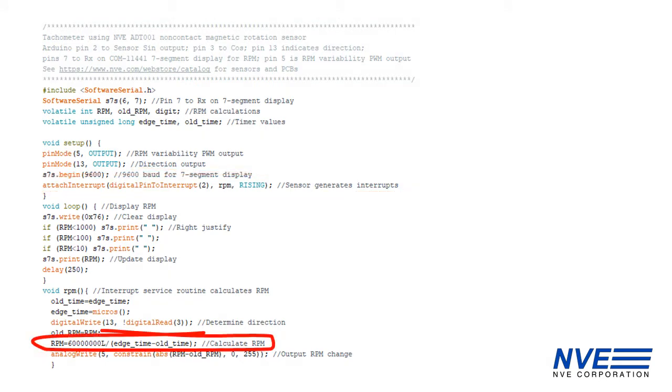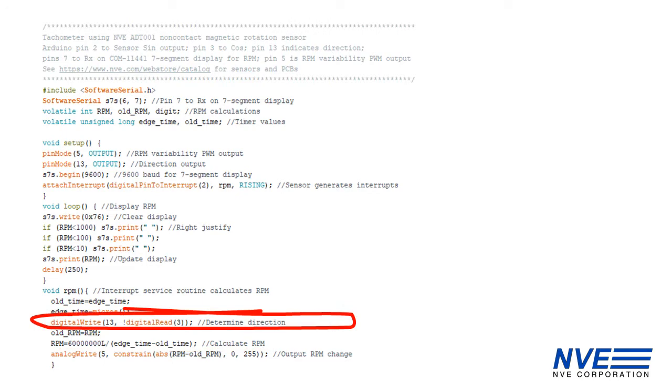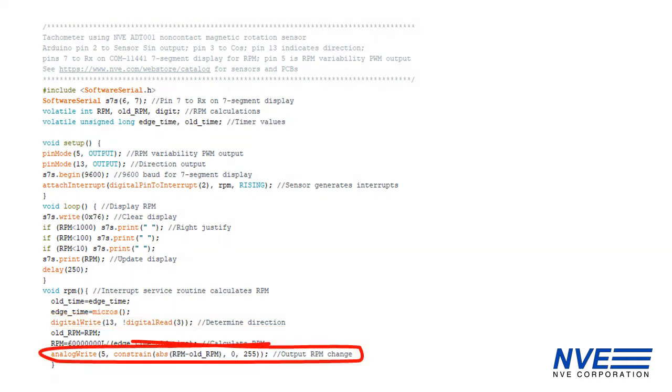The interrupt service routine calculates RPM. Direction is determined by the phase of the sensor's cosine output at the sine output edge interrupt. We track the RPM change here.